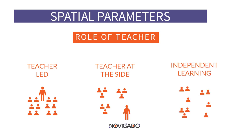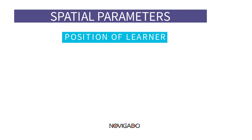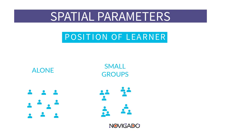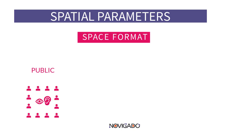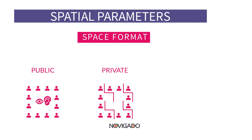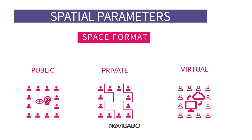Or do they work completely independently without your supervision? For the spatial design, you can also decide on the positioning of the learners. In some cases students work individually on a task; they can also work in small groups; or the learning can take place in plenary with all the students. Finally, there is the parameter of the space format. Activities will take place in public, where all learners have visual and auditory contact with the rest of the class and the teacher. Some schools create learning spaces where students can work in private or with limited distraction, and when working virtually, the physical contact is completely diminished.